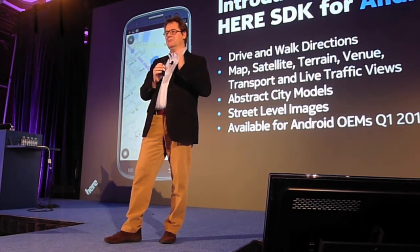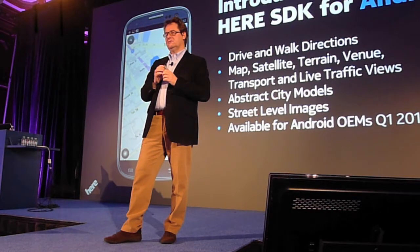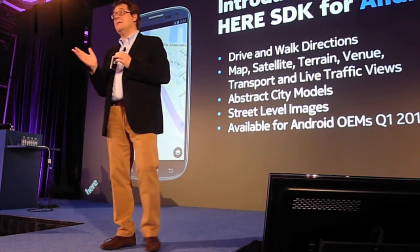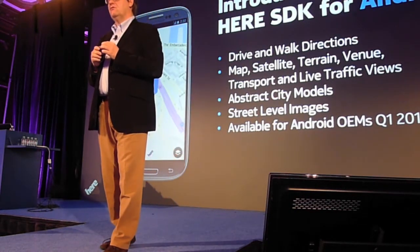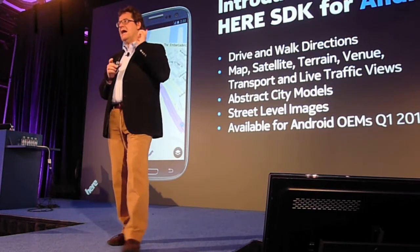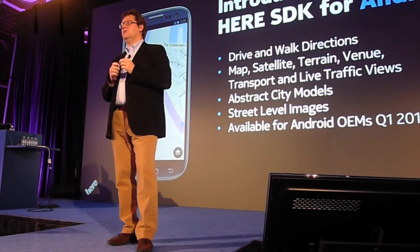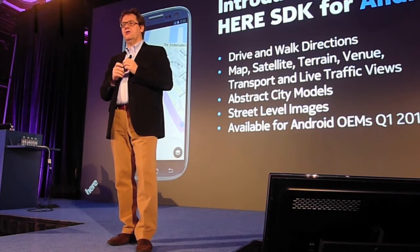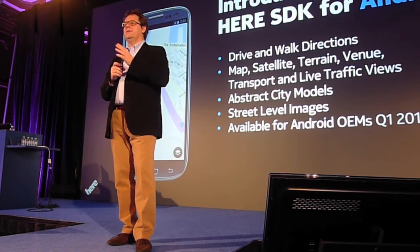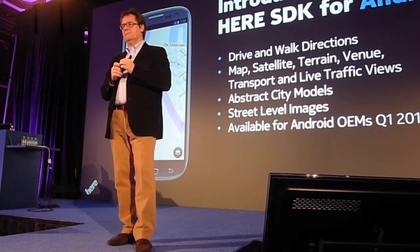It comes with full drive and walk directions, vector maps, satellite maps, terrain maps, thousands of venue maps, and the abstract city model technology that I talked about. You can see a single building highlighted on that particular screen, and also street-level imagery.